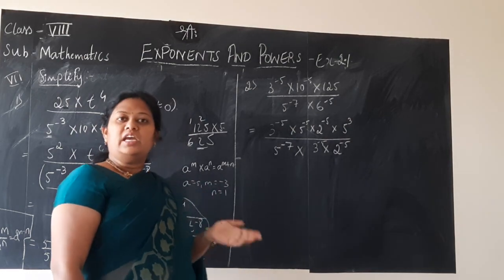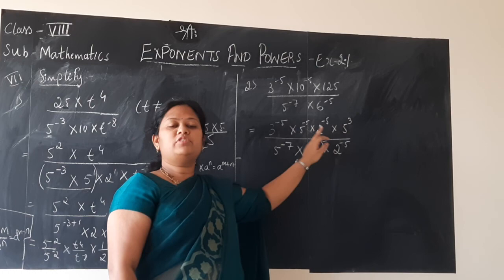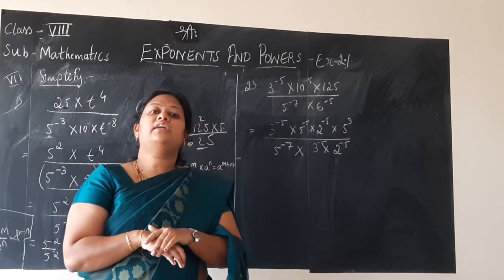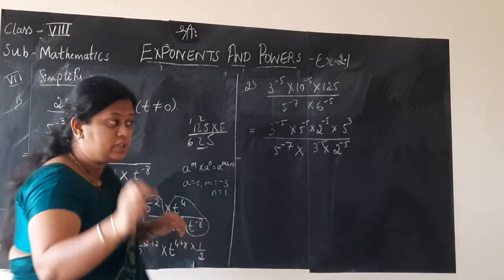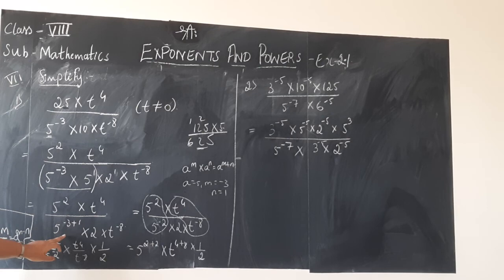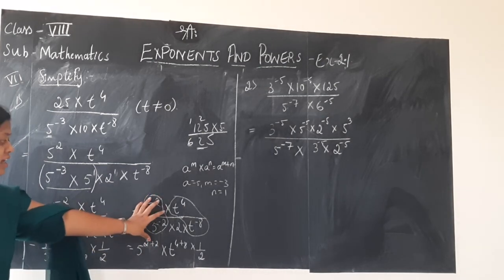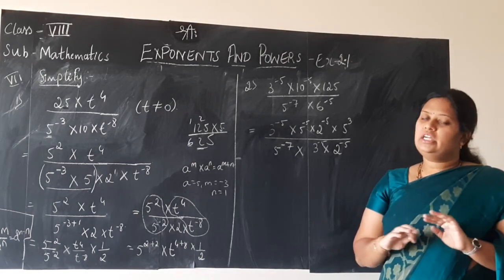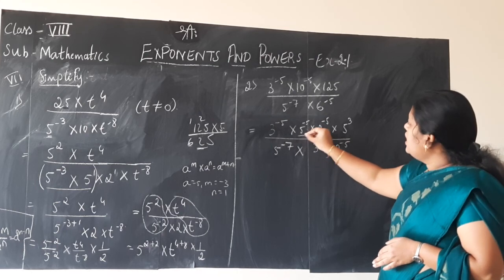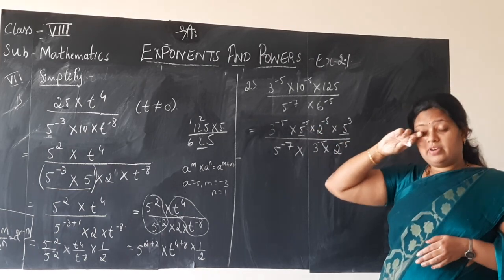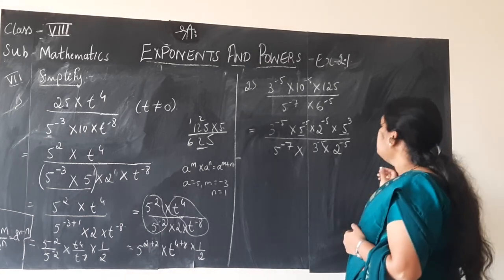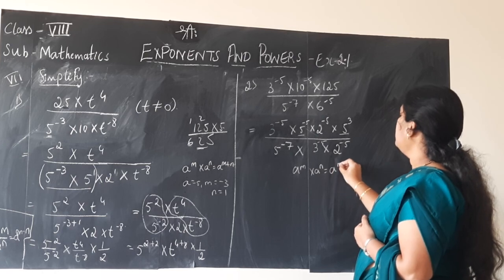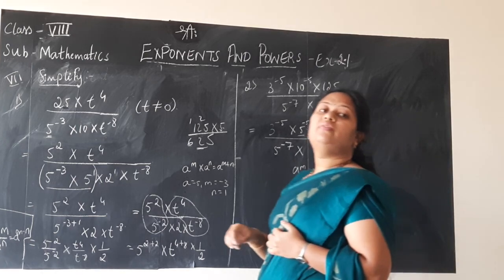5 to the power minus 7 cannot be simplified further, writing as it is. But how about 6? 3 into 2 is 6. So I will split number 6 as product of 3 into 2. The exponent minus 5 that number 6 has must be given to both multiples: 3 power minus 5 into 2 to the power minus 5. This step is very important. If you have same base numbers many times in the numerator, try to simplify them there itself before grouping numerator and denominator terms.